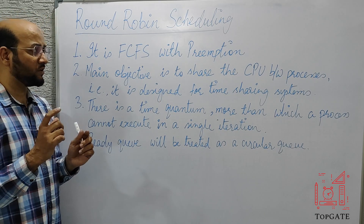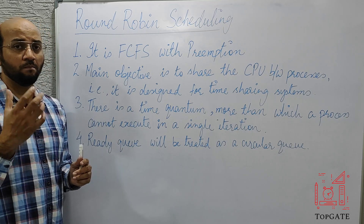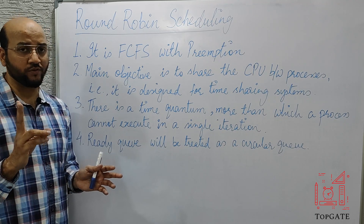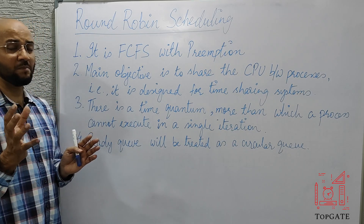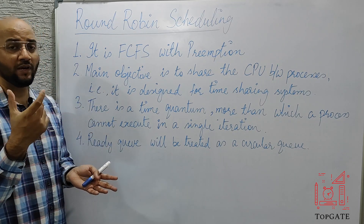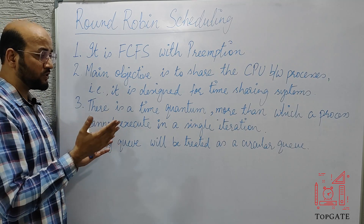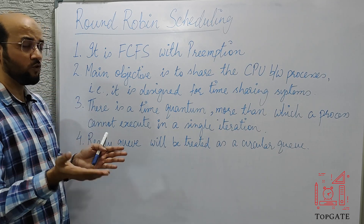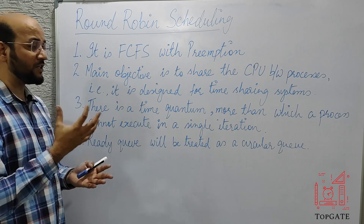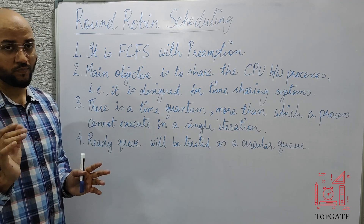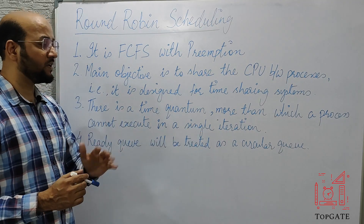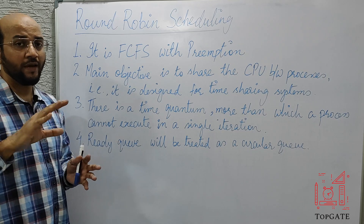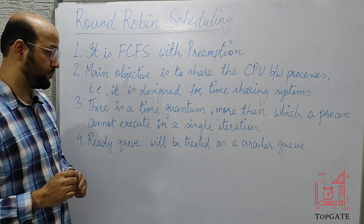Third point: there is a time quantum beyond which a process cannot execute in a single iteration. For example, if a process has a burst time of 50 units but the time quantum is 2, it executes only 2 units per iteration instead of 50. Fourth point: the ready queue is treated as a circular queue — processes taken from the head are sent to the tail after their turn.